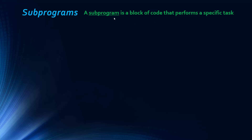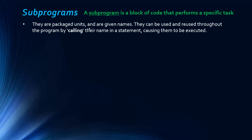A subprogram is a block of code that performs a specific task. The term subprogram isn't the most commonly used term — often they're called subroutines or routines. A subprogram really does explain what they are: you have your main program and then this packaged unit that acts as a program within a program.